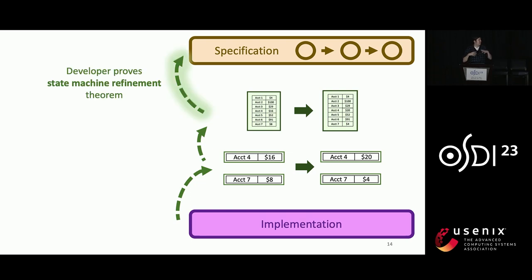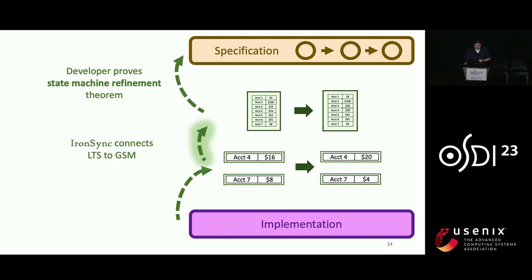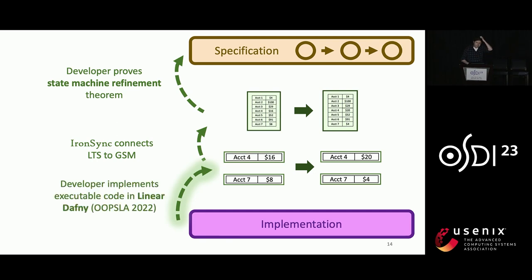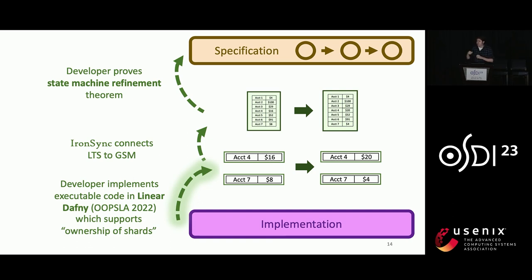At the very topmost level, where it's highly abstract, the developer proves a state machine refinement theorem — a pretty old idea. By design, the global state machine is a very abstract view of the system where locks and so on have been abstracted out, making this one of the more straightforward parts. For the middle link, the local view is a refinement of the global view simply by the IronSync formalism, by definition. Finally, to deal with the implementation, the developer writes their implementation in linear Dafny. Dafny is a popular verification language, and linear Dafny is an extension that lets us reason about ownership of the shards — a single thread can conceptually take ownership of some shards and show how to manipulate them to express these transactions.